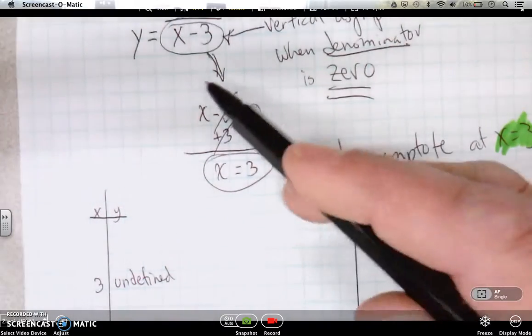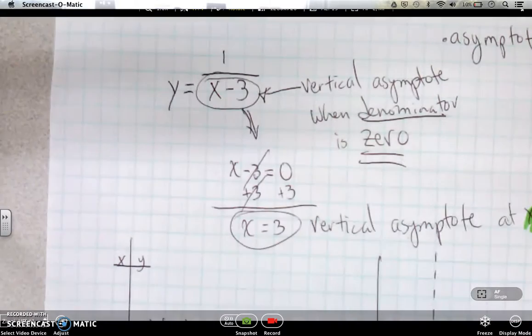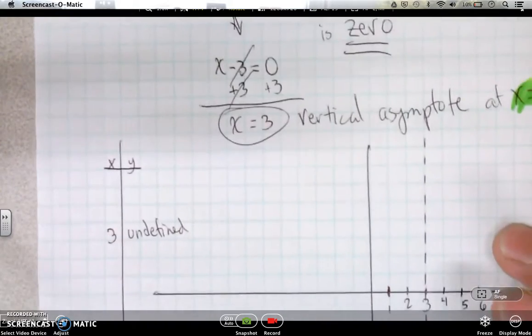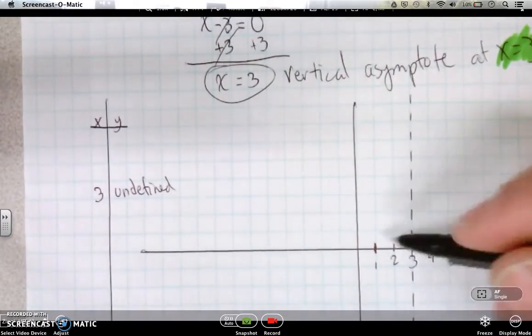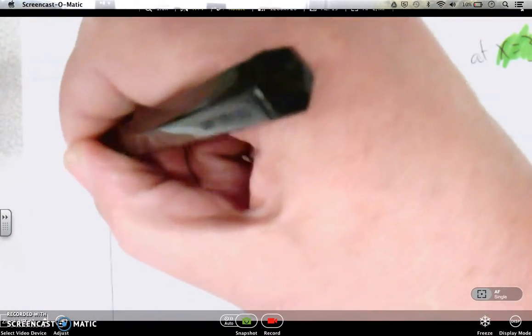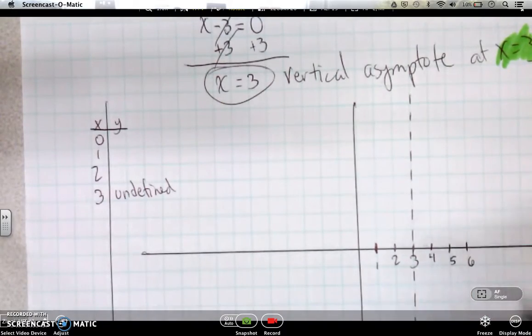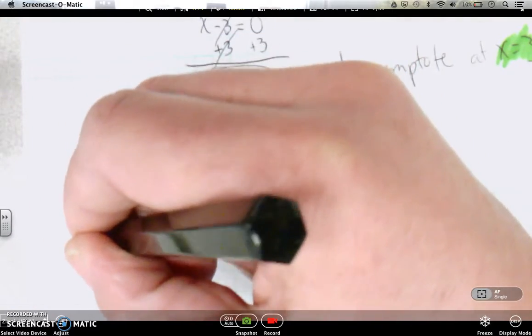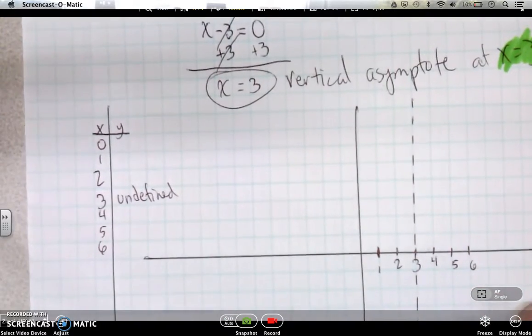If you plug in 3, you get a 0 on the bottom of this fraction. Can't have that. So 3 is undefined. But we can still find out what's going on at 0, 1, 2. And we'll still want to know what's happening at 4, 5, 6.